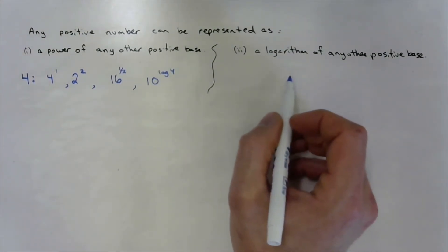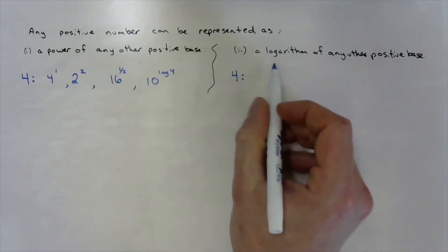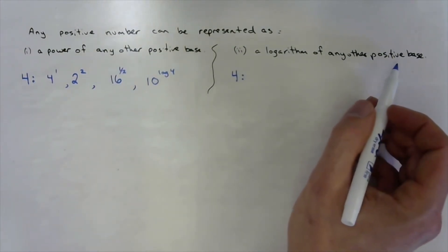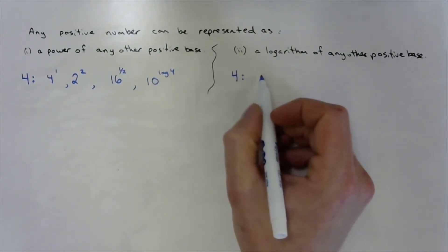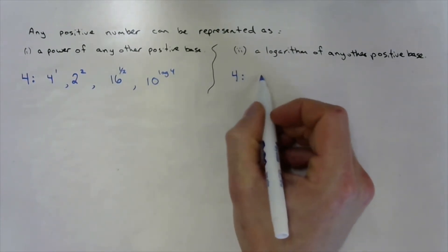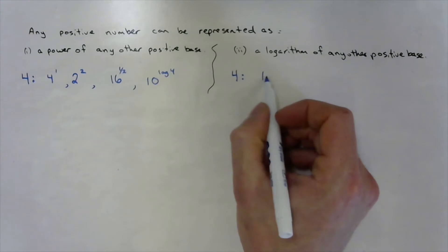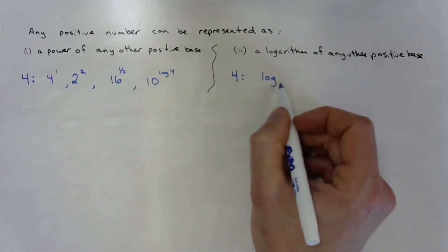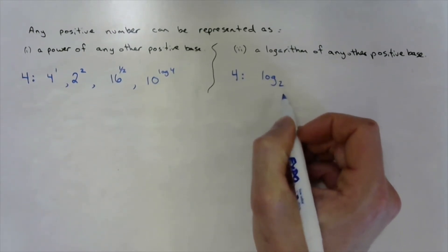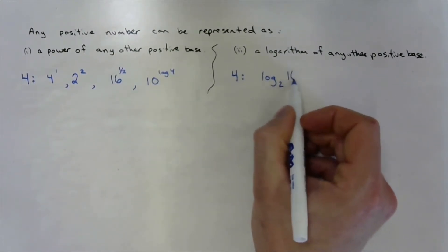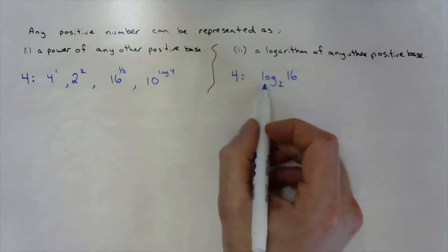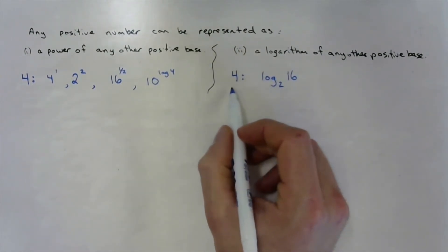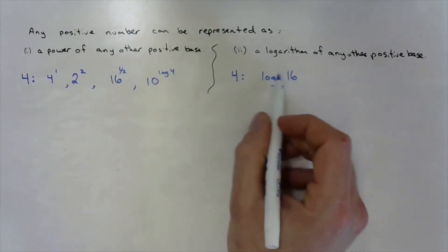We can also express the number four as a logarithm with different bases. Four is the exponent that takes a certain base to equal a certain number. If we make our base two, then two to the power of four is sixteen, so the log of sixteen base two is four — that's a way to write four as a log.